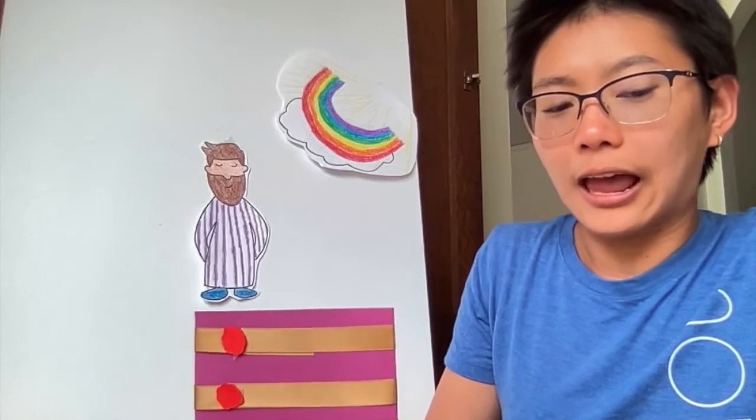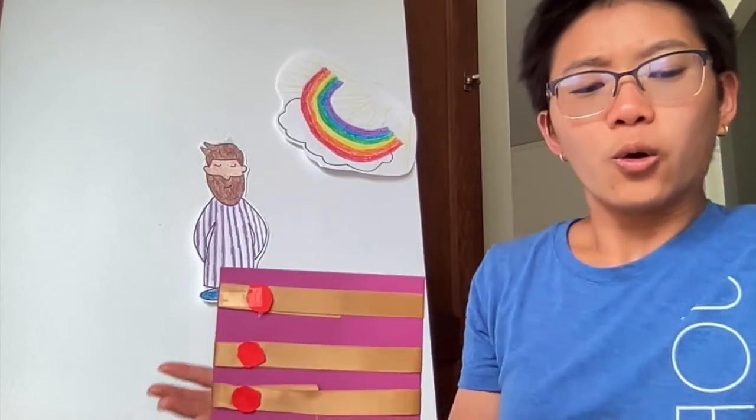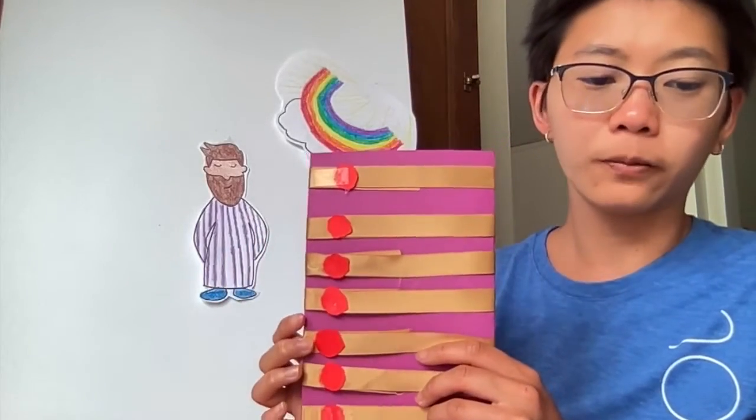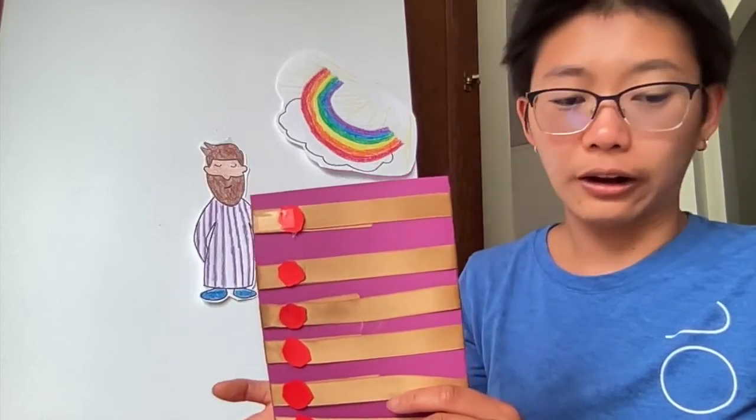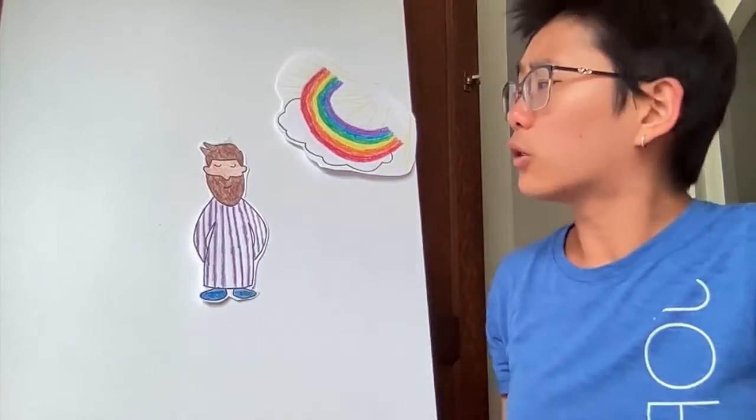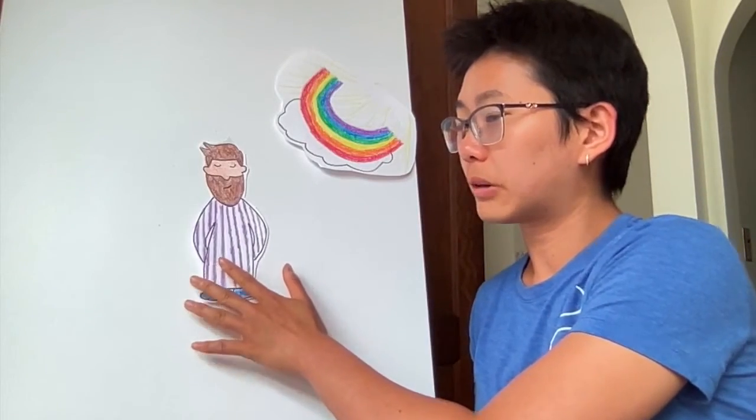One of the angels asked, Who is good enough to break these seals? They are very strong. And the angels looked around, but no one was good enough. Now John became sad and he began to cry because he wanted to read the book. He wanted to know what God had written. Then someone said, Don't cry. Jesus can open the book because he is good enough.